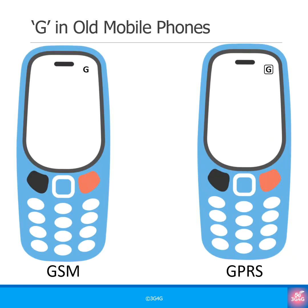Once upon a time, G used to appear as an icon in the top right corner of mobile phones. G meant GSM, and G in a square indicated GPRS, which was how the first internet-capable phones accessed the web.